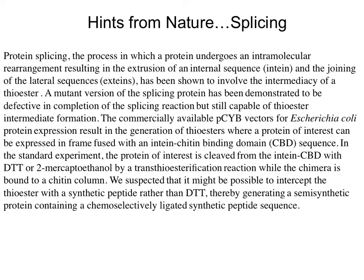Using this vector, you generate a fusion protein, and then the protein of interest is cleaved from the intein chitin-binding domain with DTT or beta-mercaptoethanol by a transthioesterification reaction, while the chimera itself is bound to a chitin column. The key insight was that it could be possible to intercept the thioester with a synthetic peptide rather than DTT, generating a semi-synthetic protein containing chemoselectively ligated synthetic peptides.